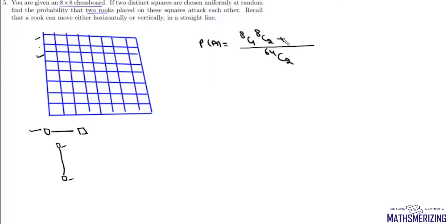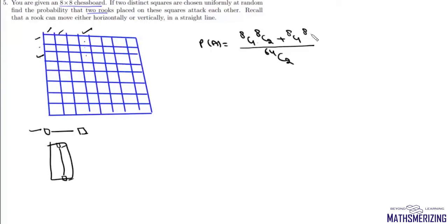We can also place these rooks vertically. To place them vertically, we choose a vertical file — we have eight vertical files, so we select any one in 8C1 ways. On the selected file, we can place the rooks on any two squares, which can be done in 8C2 ways.